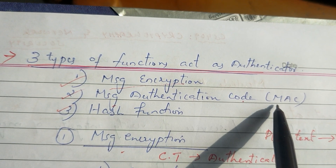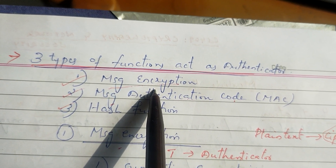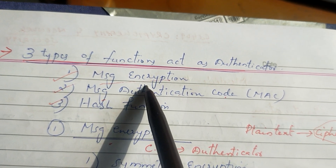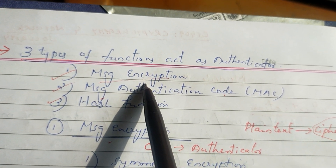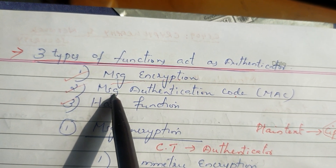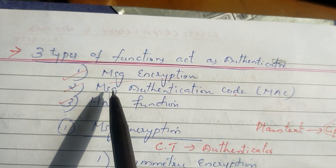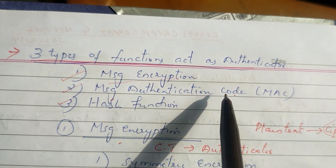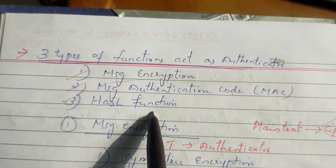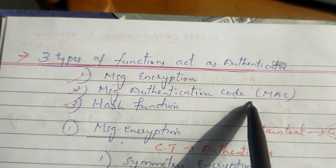We have done encryption in the last class. Now, we will explain the MAC function. This is one of two types of functions which act as an authenticator — that is the MAC function, which stands for Message Authentication Code. In the next video, we will cover the hash function.